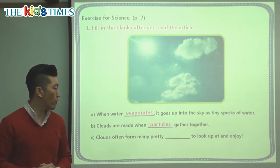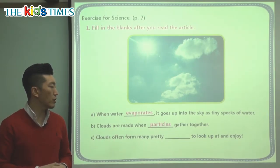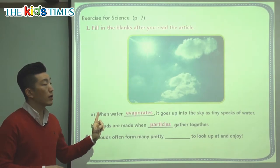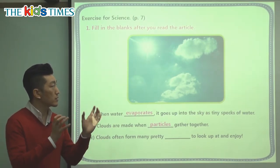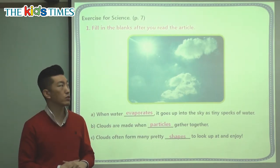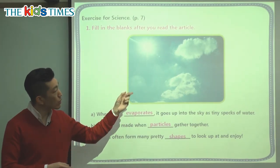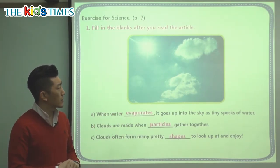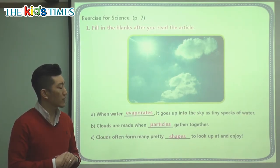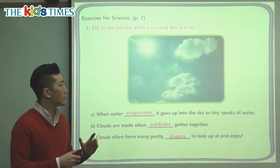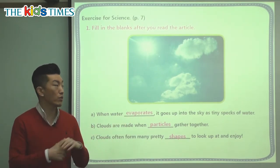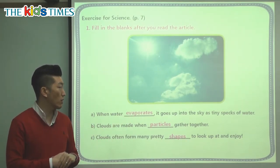Clouds often form many pretty something to look up at and enjoy. So when we look up at the sky, we see different — different what? Different shapes. Sometimes they look like a donut, or they can look like a cartoon character. So there are different shapes — most of the time they're just very fluffy or look very soft.